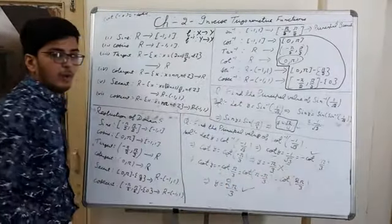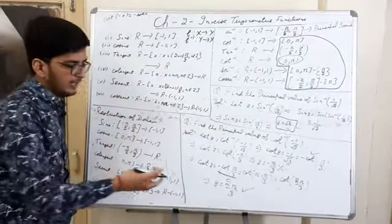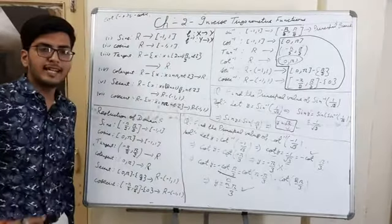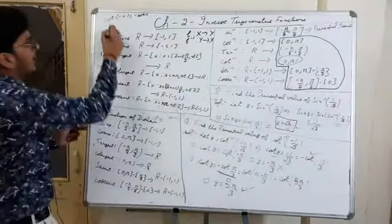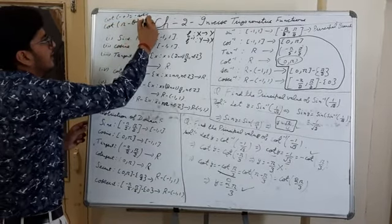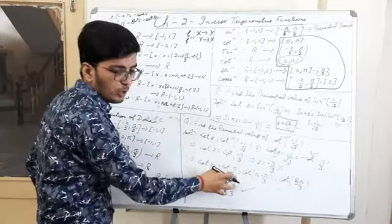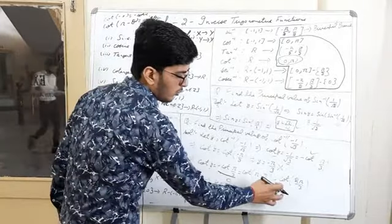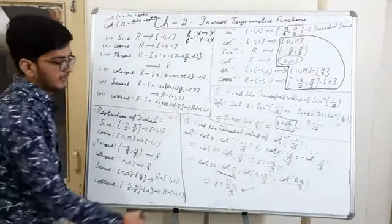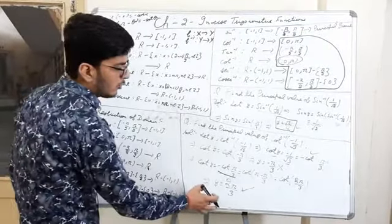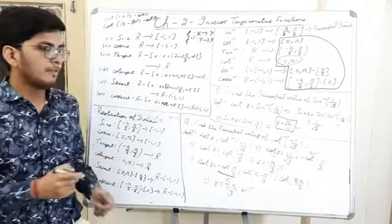So we need to find another value. We know that cotangent is negative in the second quadrant, and we have the identity cot(π - θ) = -cot(θ). So we can write -cot(π/3) as cot(π - π/3) = cot(2π/3). Therefore cot y = cot(2π/3), giving y = 2π/3. Since 2π/3 lies in the principal branch (0, π), the principal value of cot⁻¹(-1/√3) is 2π/3.